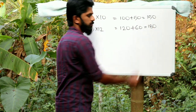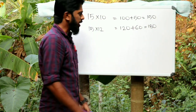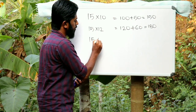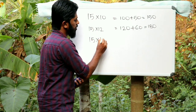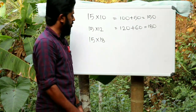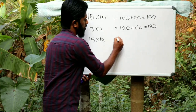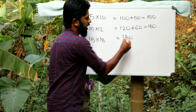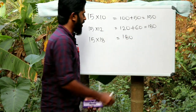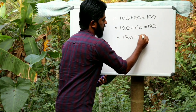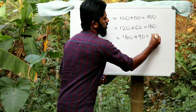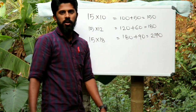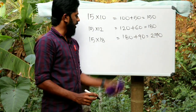Next one: 15 times 18. Look, 15 times 18 — the answer is 180 plus 90, therefore the answer is 270.